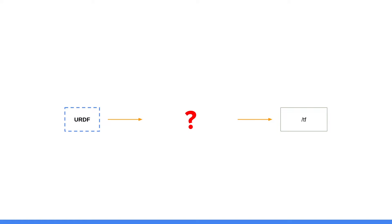So here's our problem. We have the URDF on the left, so that's what we have. How do we get the TF? What do we need to do in the middle to get the TF published? Well, let's start from the URDF file.